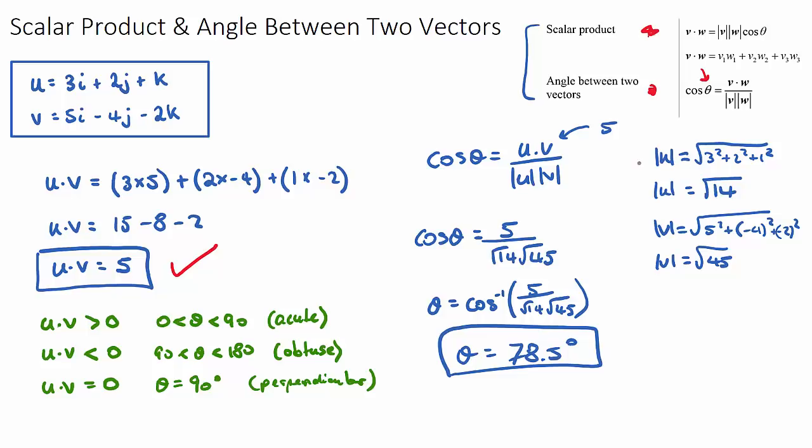And then we found the magnitudes of each of the vectors and we used our angle between two vectors equation to solve. Hopefully you got a few tips out of this question. I hope you practice a few more and good luck.